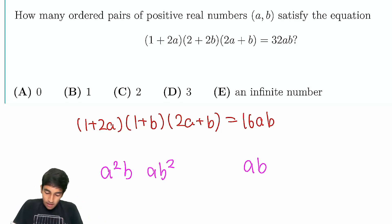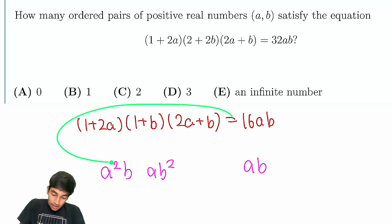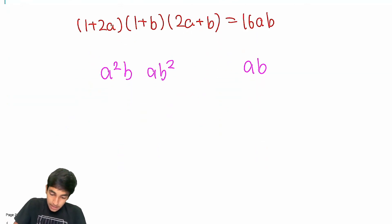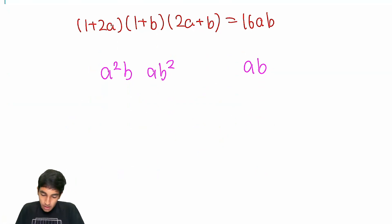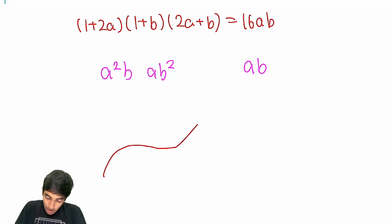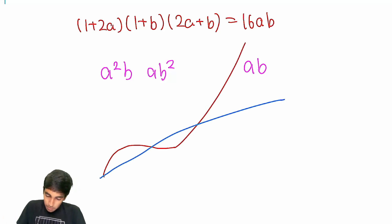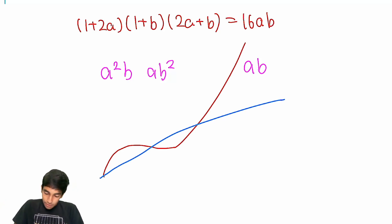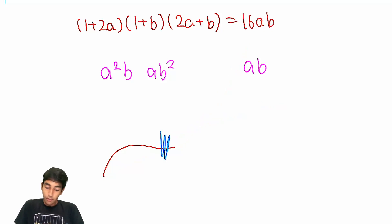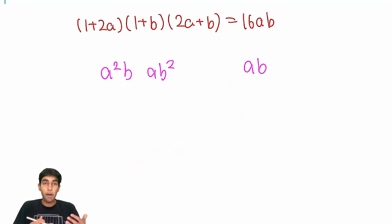Because there will be some point where the left side — even if you draw a 3D graph — will completely outpace 16ab in the long run, simply because it has more variables. If there's some kind of upper bound, that will be really useful, because it gives us a finite number of possibilities to check.